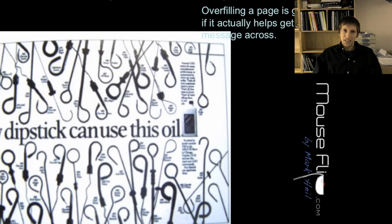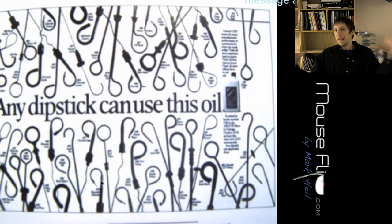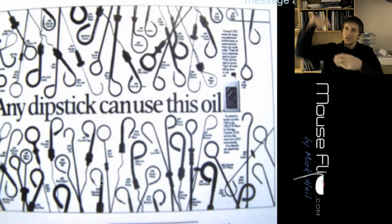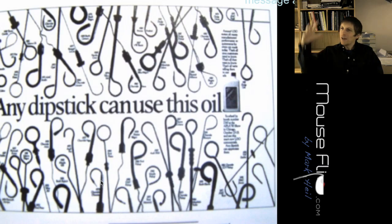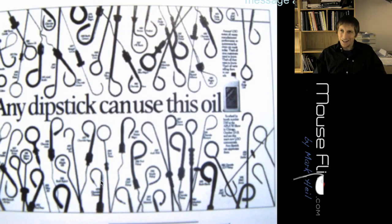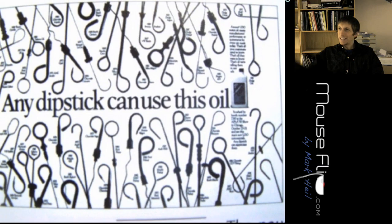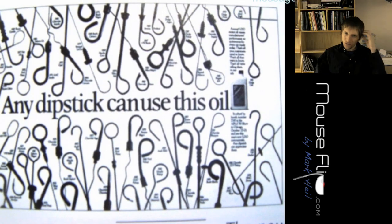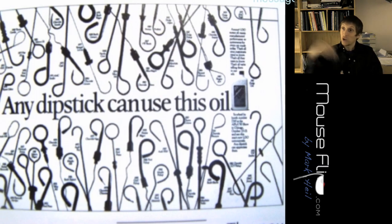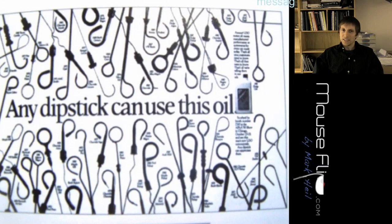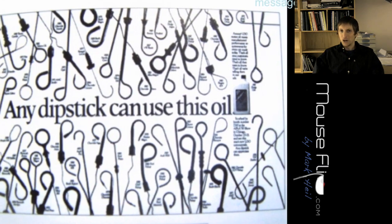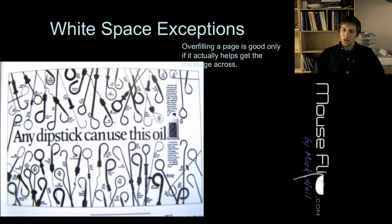Law of diminishing returns. Now sometimes it's good to overcrowd a page. This is an advertisement or a poster — notice it's called a dipstick. A dipstick is used to measure the oil in your car. In America, once you turn 16, you get your license and you drive, so you have to check your oil. They're advertising for this oil and then any dipstick can use this oil — and these are all these dipsticks. Notice that the message ties in with the dipsticks and really gets the message across. So sometimes it's good to overflow a page with information.